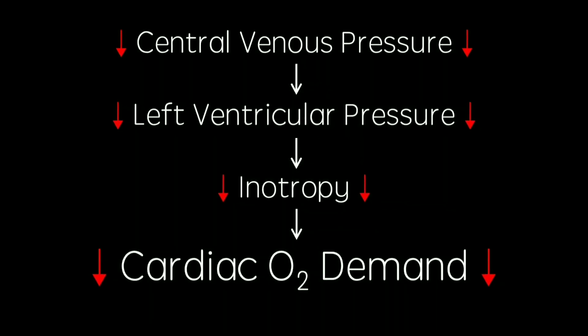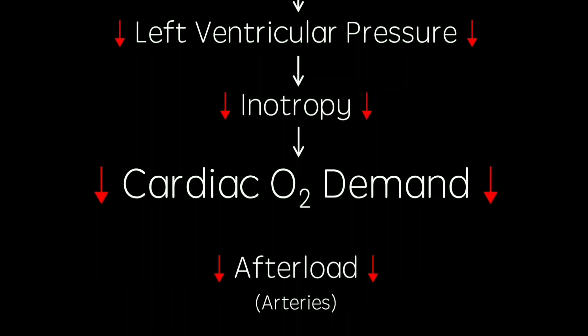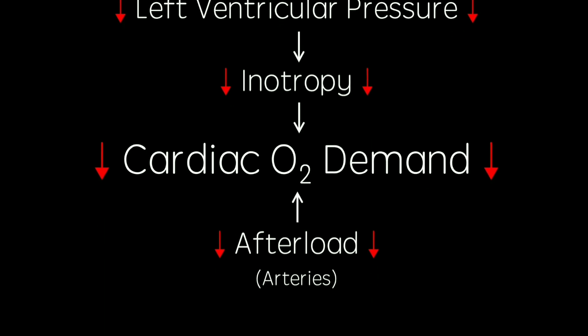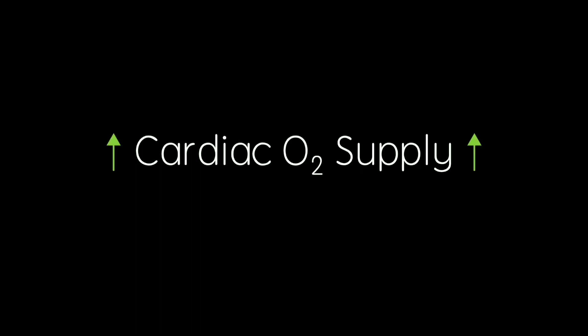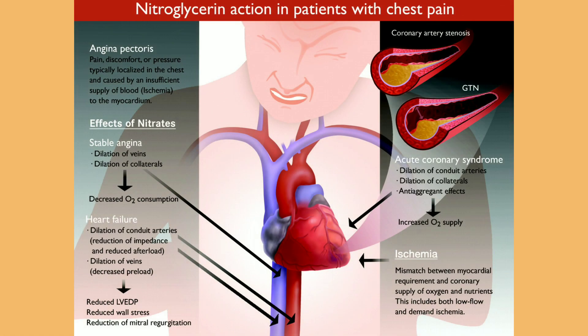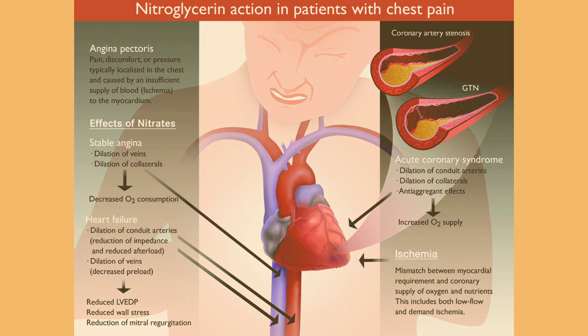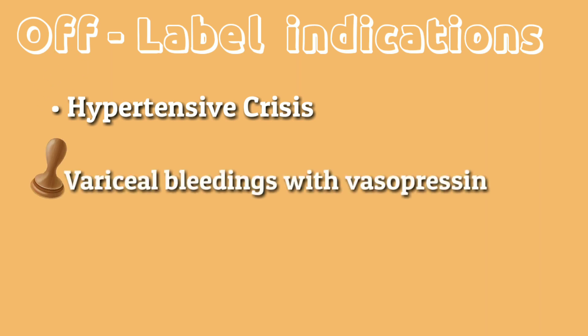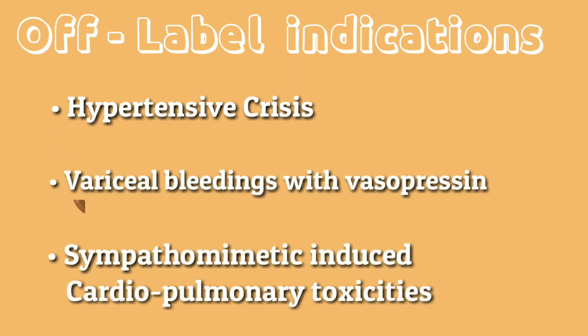GTN decreases cardiac oxygen demand and afterload, and by increasing coronary blood flow it also increases cardiac oxygen supply. It is used in angina pectoris, perioperative hypertension, congestive heart failure in the setting of MI, and intraoperative hypotension. Off-label uses include hypertensive crisis, variceal bleeding with vasopressin, and sympathomimetic-induced cardiopulmonary toxicities.